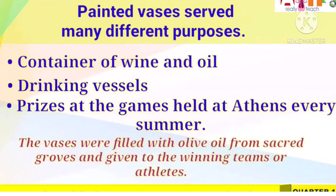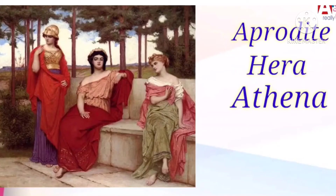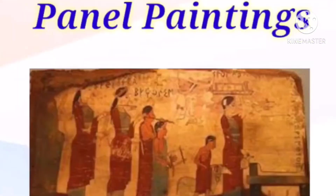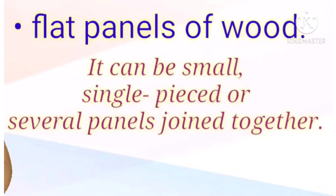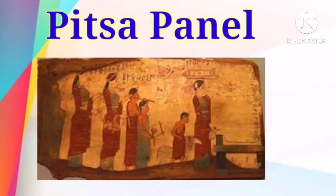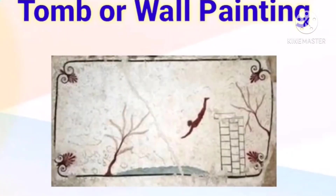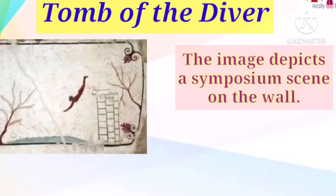Painted vases served many different purposes: as containers for wine and oil, as drinking vessels, and as prizes for games held at Athens every summer. A sample of classical vase painting is the Judgment of Paris — a contest between the three most beautiful goddesses of Olympus for the prize of a golden apple addressed to the fairest. Next is panel paintings — these can be flat panels of wood, either small single pieces or several panels joined together. Most panel paintings no longer exist because of their organic composition. The earliest panel painting is the Pitsa panel. Lastly, tomb or wall painting — one example is the Tomb of the Diver.